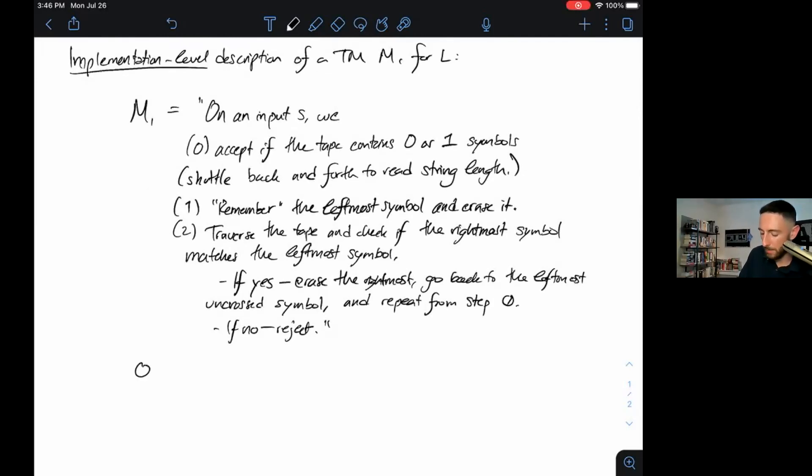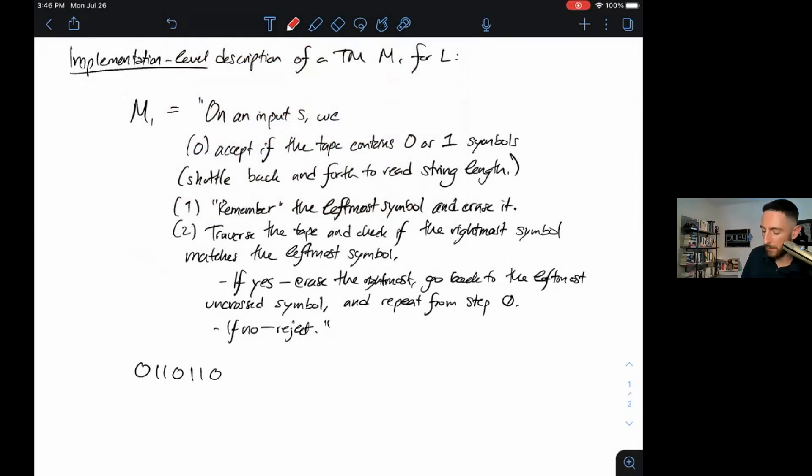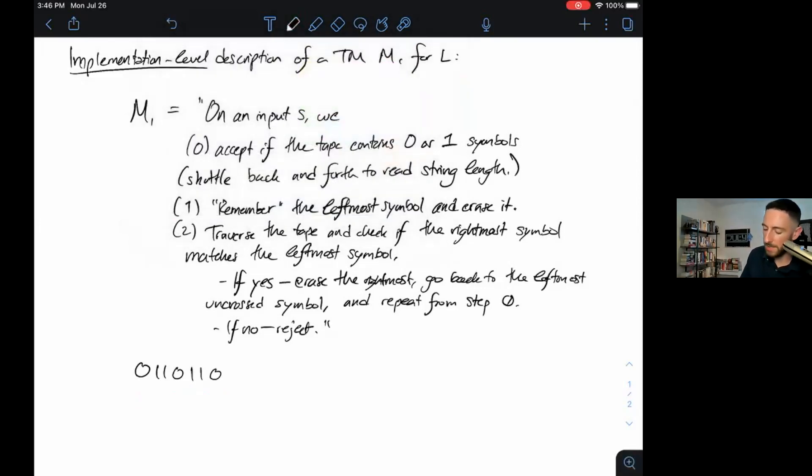This is a complete implementation level description of a Turing machine that I claim will accept the palindromes. To see how it might work, imagine I put in the palindrome 0110110. If we follow these instructions, we would first check if the input contains 0 or 1 symbols. It doesn't, so we ignore that. Then we shuttle back and forth. We erase the leftmost symbol, remember it's a 0, go all the way to the right and erase the rightmost symbol. We continue this process until finally we have a single symbol left. So we accept.